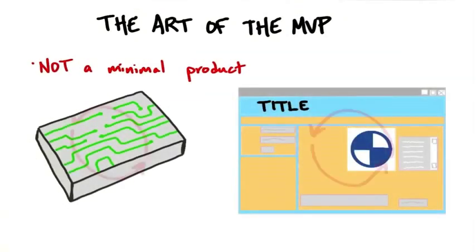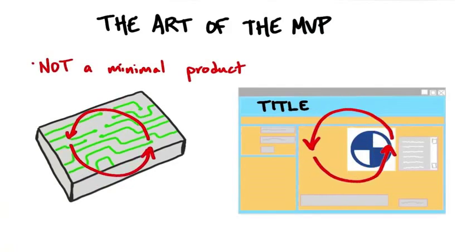An MVP is based on interaction and iteration in understanding customers' needs and pains and gains. And if all you're doing is cutting off the feature list, then you clearly haven't run the process.